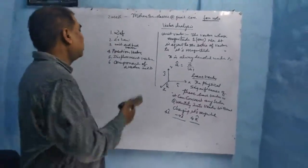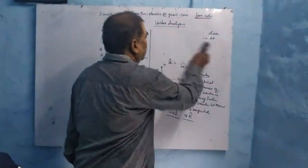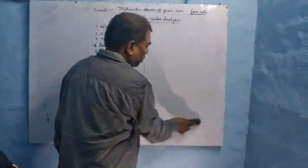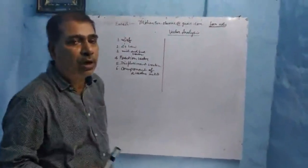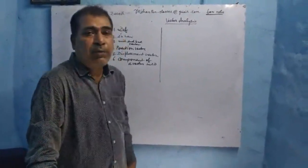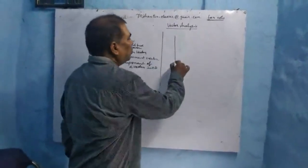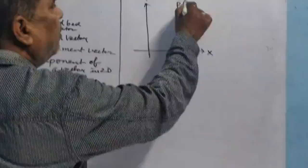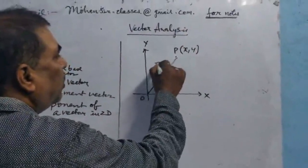Now I will go to another topic: position vector. This is the most important topic in vector analysis. Position vector is also called radius vector. What is position vector? The orientation of a point with respect to the origin is called the position vector. In two dimensions, with x-axis and y-axis, let P be the point having coordinate (x, y) and O be the origin. The line joining O to P is called the position vector.